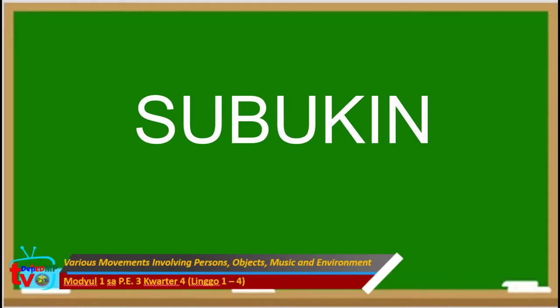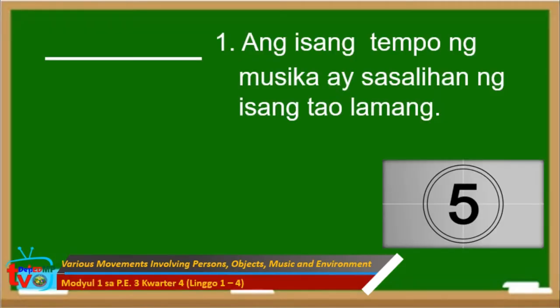Sa subukin, basahin ang bawat pangungusap ng maigi. Isulat ang tama kung wasto ang isinasaad nito at mali kung hindi wasto. Isulat ang sagot sa patlang na inilaan bago ang bawat bilang. Limang segundo ang pagsagot sa bawat tanong. Una, ang isang tempo ng musika ay sasalihan ng isang tao lamang. Tama o mali?